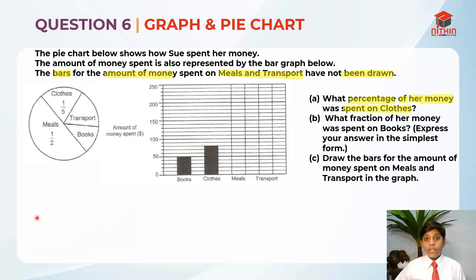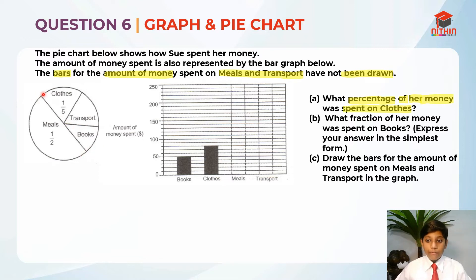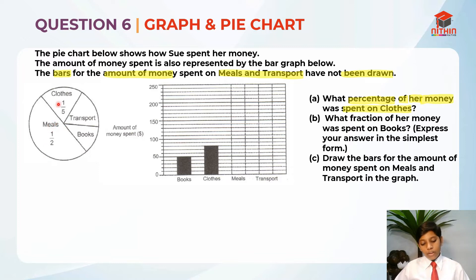Let's analyze the pie chart and the bar graph. In the pie chart, meals is half. Because it's a circle, when one side is half the other side is also half. So one whole minus half gives us the other half. That means clothes plus transport plus books equals half. The only information we know is the clothes value and the meals value — meals is half and clothes is one-fifth.